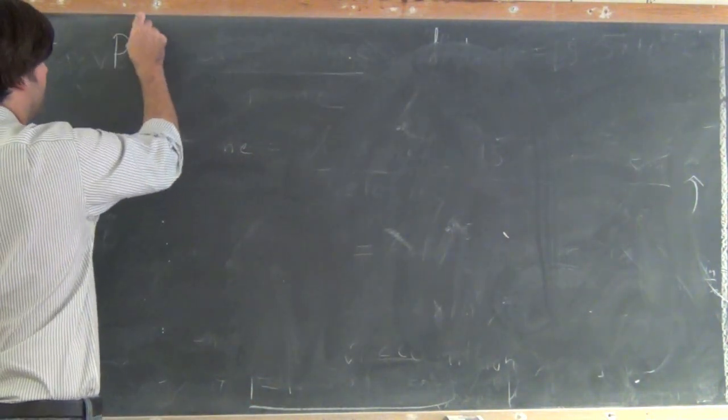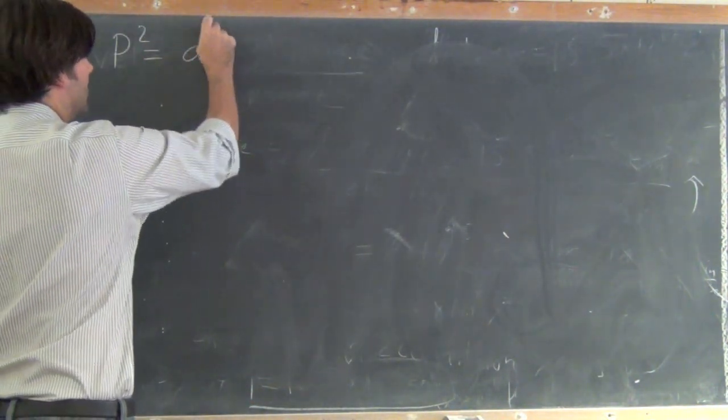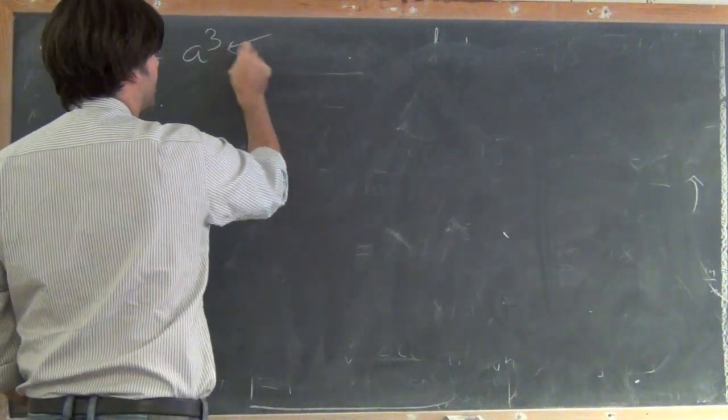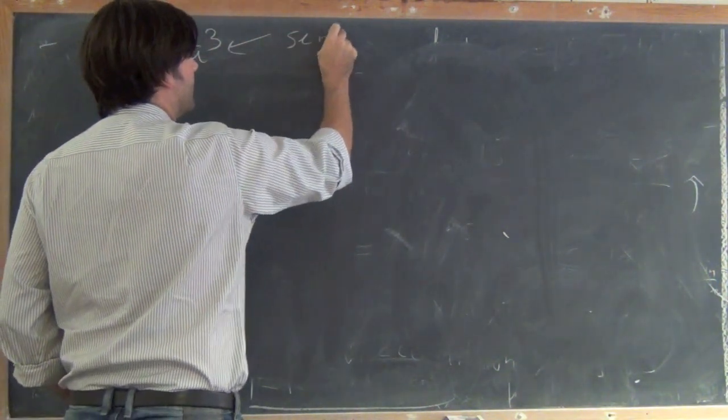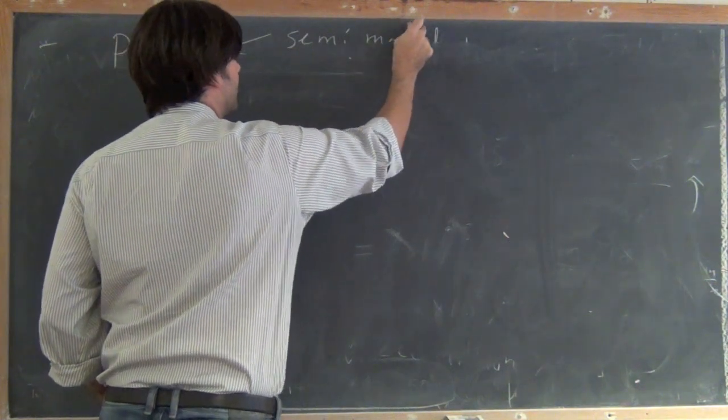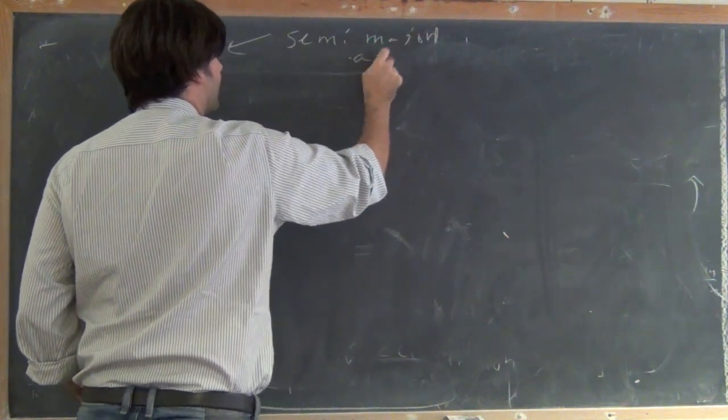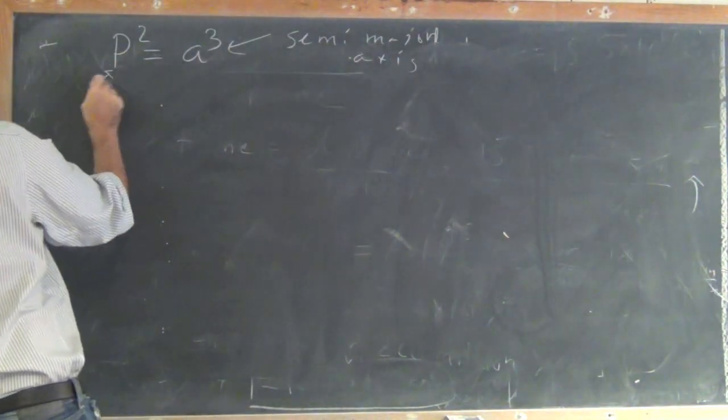Remember Kepler's law is p squared is equal to a cubed, where a is the semi-major axis, p is the period.